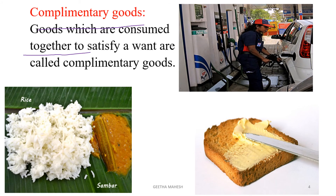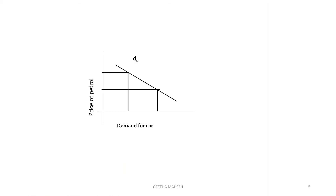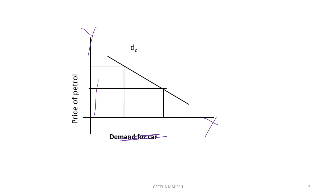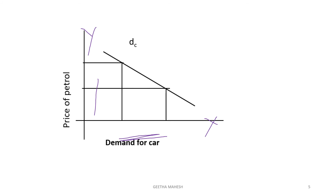Petrol and car, bread and butter are also good examples of complementary goods. Here, demand for petrol depends on the price of the car. We will discuss with respect to demand for car and the price of petrol. Demand for car is measured on the x-axis and the price of petrol is measured on the y-axis. There is an inverse relationship between the price of petrol and demand for car.